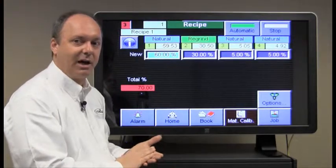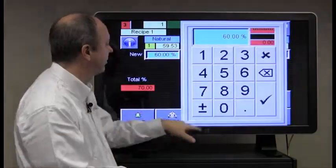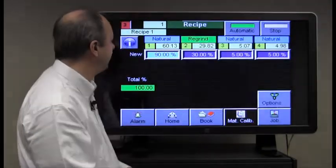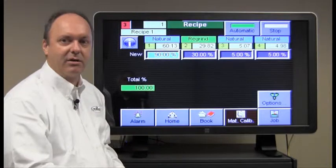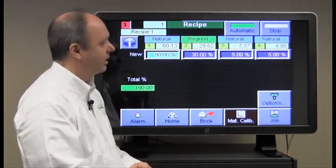Again, the naturals always have to add to 100. So what we'll do is modify this one for demonstration purposes. That would be 90. And we have the green line here that the naturals are all added to 100 and you have 30% of the batch will be regrind.